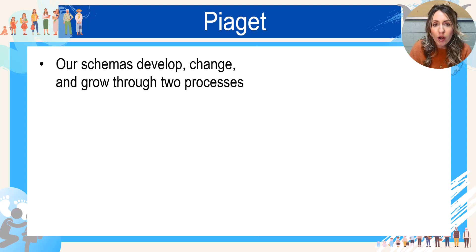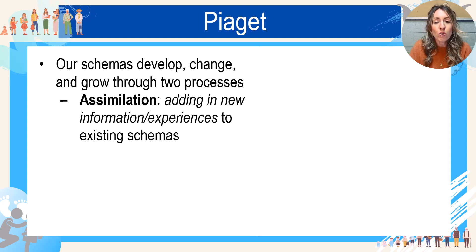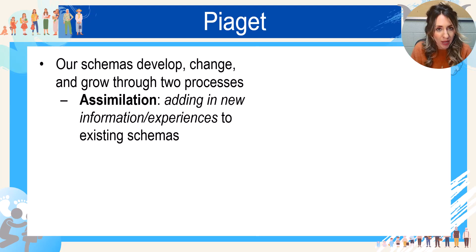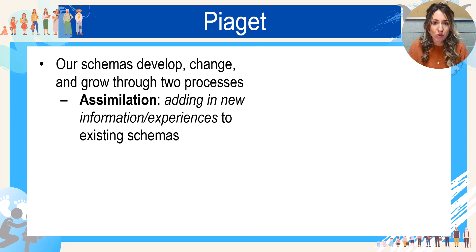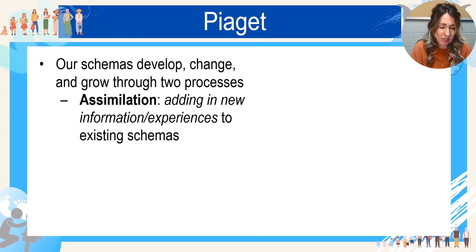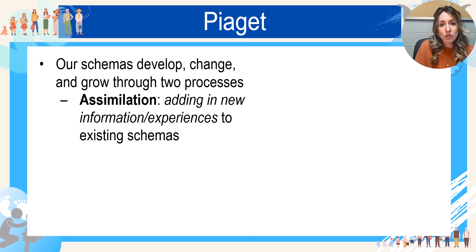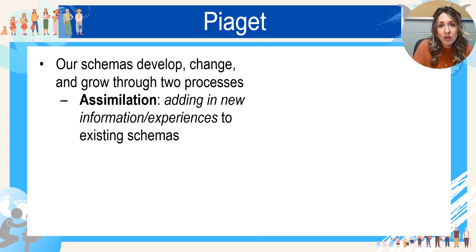So how do schemas develop, grow, and change as you get older? They go through two processes. The first is assimilation — this is when we add new information or experiences into something existing. For example, you've got this understanding of a restaurant where you sit at a table and a waiter comes up and asks what you want and brings you the food. One day you go to a restaurant where you order at the counter instead, and you think 'this isn't a restaurant because there's no waiter.' But then you learn that sometimes restaurants require you to get the food yourself — like a fast casual or fast food restaurant — and now you have assimilated this new information.